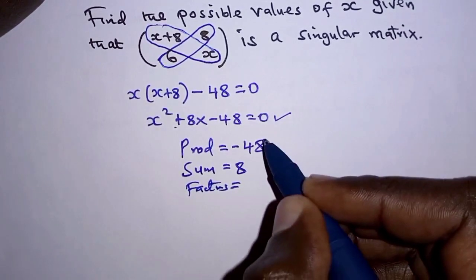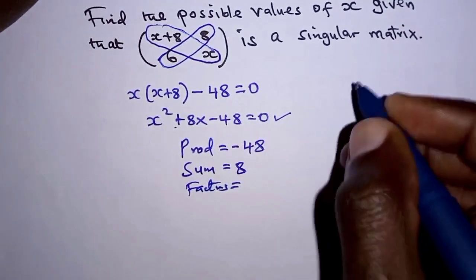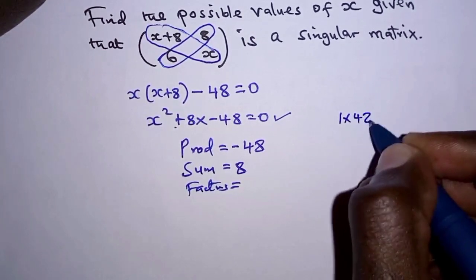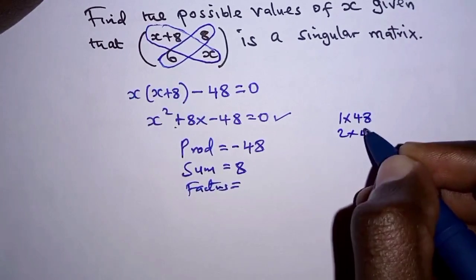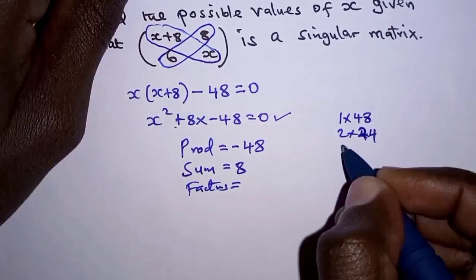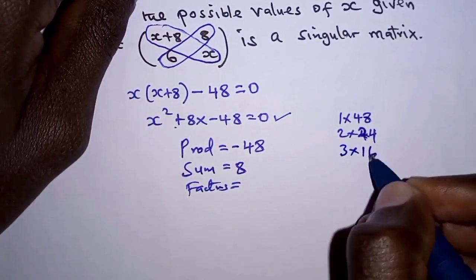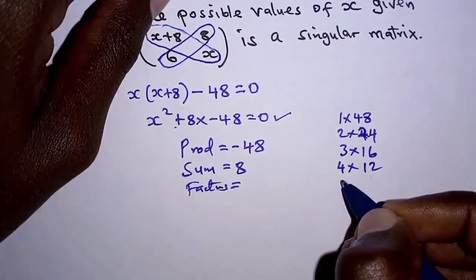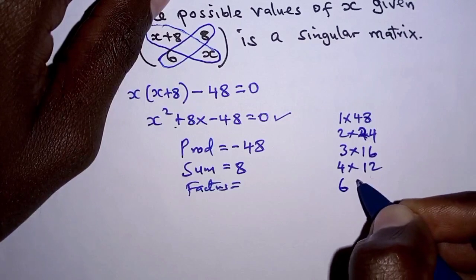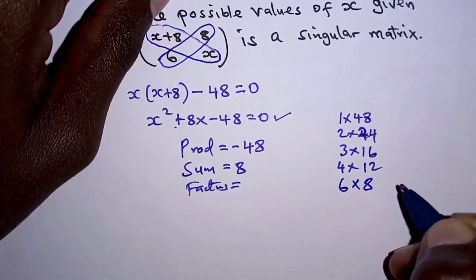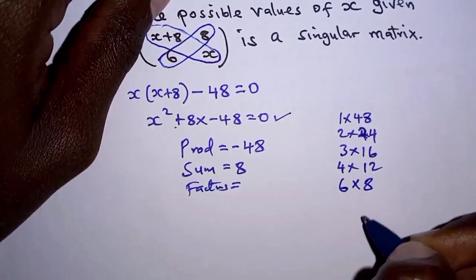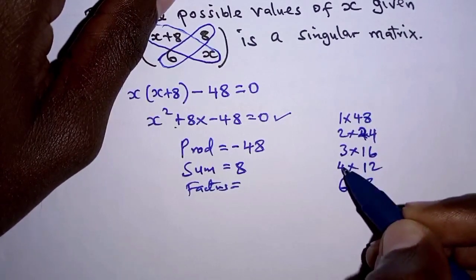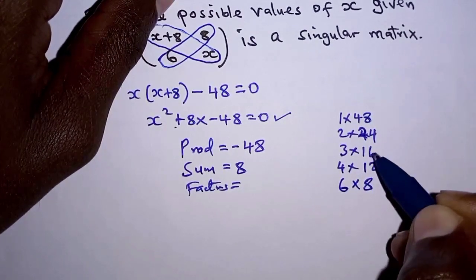We factorize 48: 1×48, 2×24, 3×16, 4×12, and 6×8. This gives us all the factors of 48: 1, 2, 3, 4, 6, 8, 12, 16, 24, and 48.